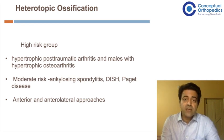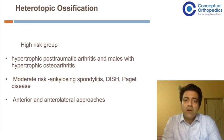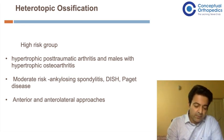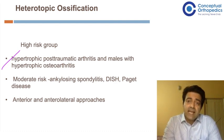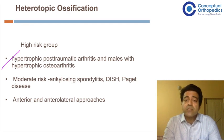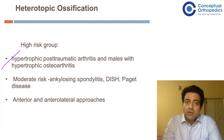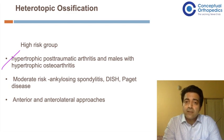An important complication is heterotopic ossification. High-risk groups requiring vigilance include patients with hypertrophic post-traumatic arthritis, especially males; conditions such as ankylosing spondylitis, DISH (diffuse idiopathic skeletal hyperostosis), and Paget's disease — all liable for forming heterotopic bone. Thirdly, certain approaches — especially the anterior and anterolateral approaches — are more liable to cause heterotopic ossification.